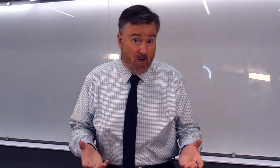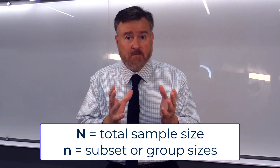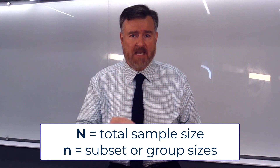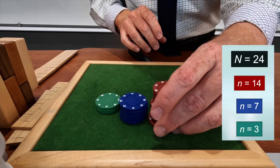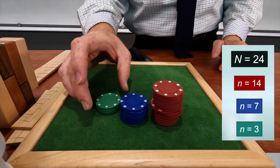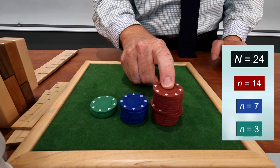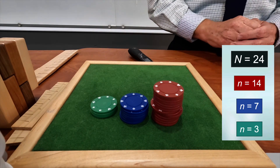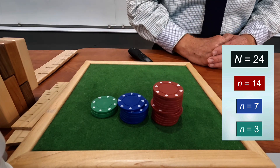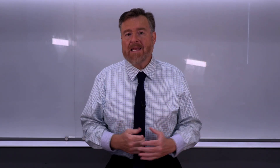Sometimes you will see frequency described with a lowercase n, with capital N representing the total and lowercase n representing subsets. Returning to our poker chips example: we have 14 red, 7 blue, and 3 green poker chips. The lowercase n for red is 14, lowercase n for blue is 7, lowercase n for green is 3 — add them all up and we have an uppercase N of 24. Since we're going to use frequency this often, we need to know what types of frequency we can compute.